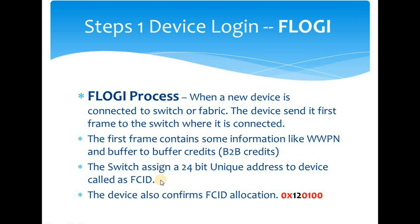That unique address is called the FCID, and it is unique to each device. The FCID is used by the switch to identify the N device connected to it, and the N device sends an acknowledgement after receiving its FCID. The FCID format starts with '0x', followed by the domain ID of the switch — for example, if a switch has domain ID 14, the FCID allocated to a connected device will include that domain ID. In summary, during FLOGI, an FCID is allocated to the device connected to the switch.